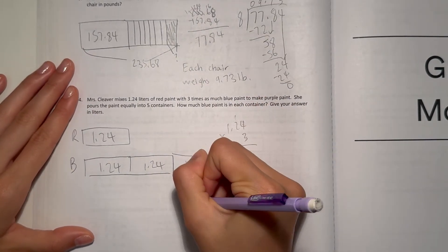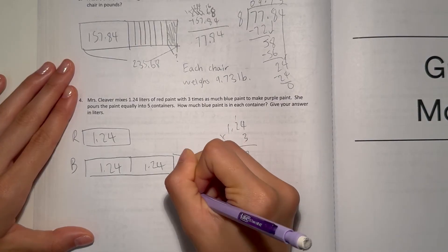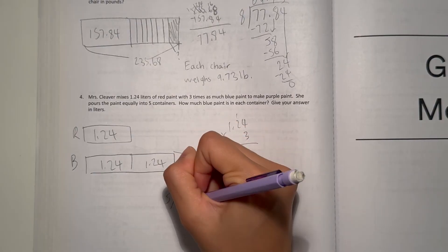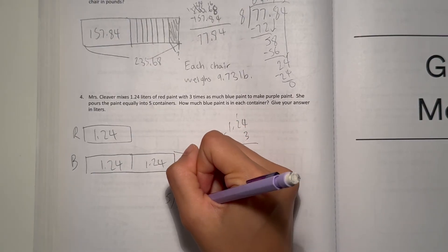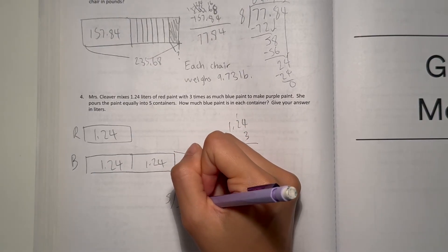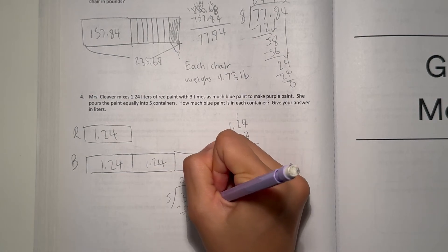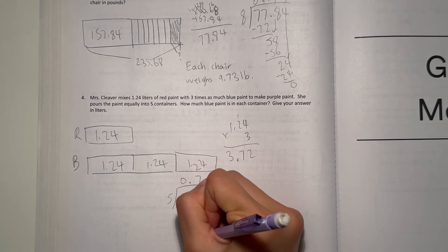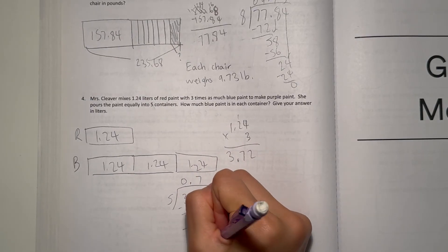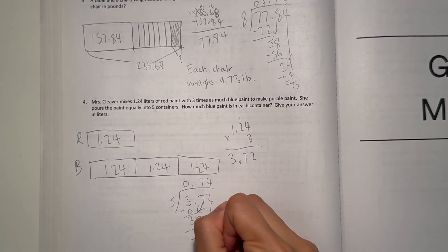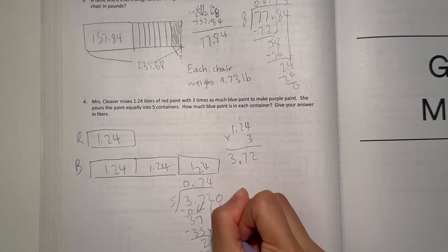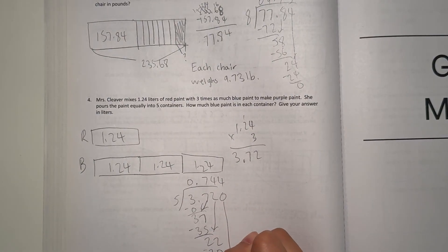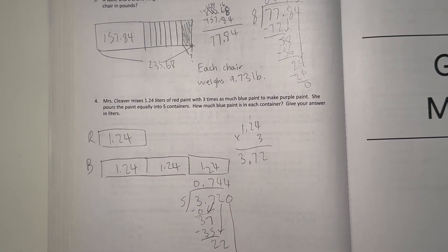But she mixes into 5 containers, so how much is in each container? 3.72 divided by 5. 5 goes 7 times into 37, 5 goes 4 times into 20. So her answer is 0.744. There are 0.744 liters of blue paint in each container.